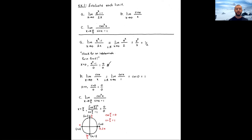Plugging in: the numerator gives cos(π/2) = 0, so cos²(π/2) = 0. The denominator gives sin(π/2) − 1 = 1 − 1 = 0. We do get the indeterminate form 0/0, so we can apply L'Hôpital's Rule. Always check for an indeterminate form before calculating derivatives of numerator and denominator.